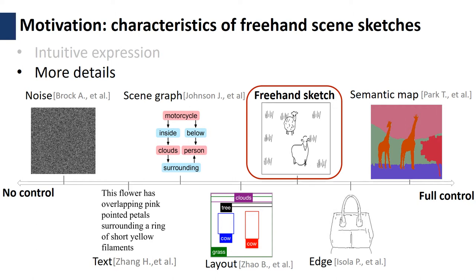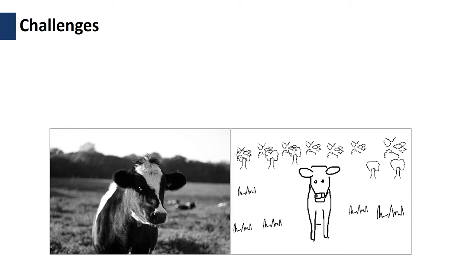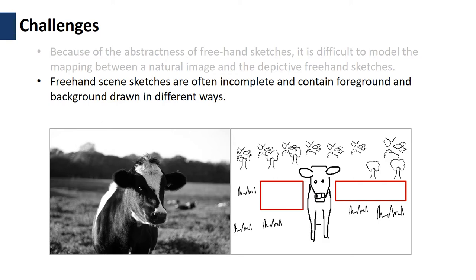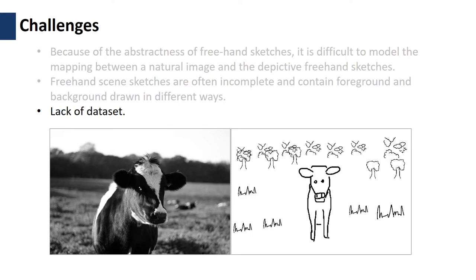However, there are several factors making this problem difficult. First, it is difficult to model a mapping between freehand sketches and natural images because of the abstract nature of freehand sketches. Second, users often prefer to sketch what they are most concerned with, like foreground, while leaving blank space and drawing background objects roughly, thereby requiring the algorithm to cope with different user requirements. Lastly, there is also a lack of paired training datasets.